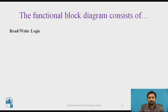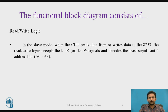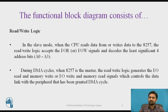The next functional block is read-write control logic. In slave mode, when the CPU reads data from or writes data to the 8257, the read-write logic accepts the IOR or IOW signals and decodes the least significant 4-bit address bits. During a DMA cycle, when 8257 is in master mode, the read-write logic generates IORead and memory write, or IORead and memory read signals, which control the data link with the peripherals that have been granted the DMA cycle.